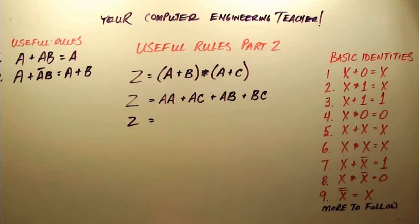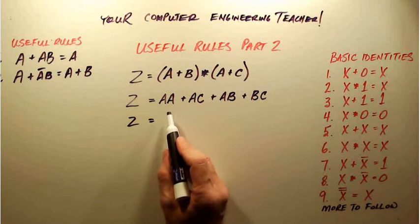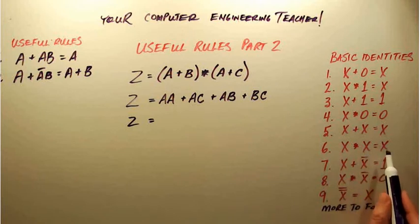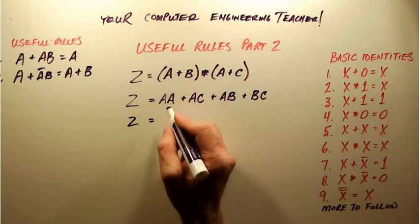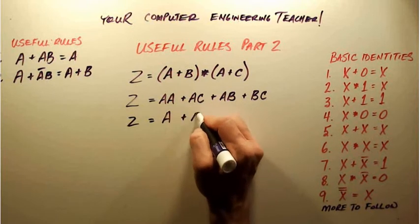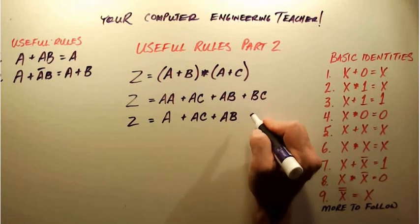Now we're going to simplify this. This first term here, A times A, we're going to look in our basic identities. We're going to see this looks a lot like number six. We've got X times X is equal to X, so A times A is really equal to A. I'm just going to rewrite everything else so we don't get confused. It looks like this.